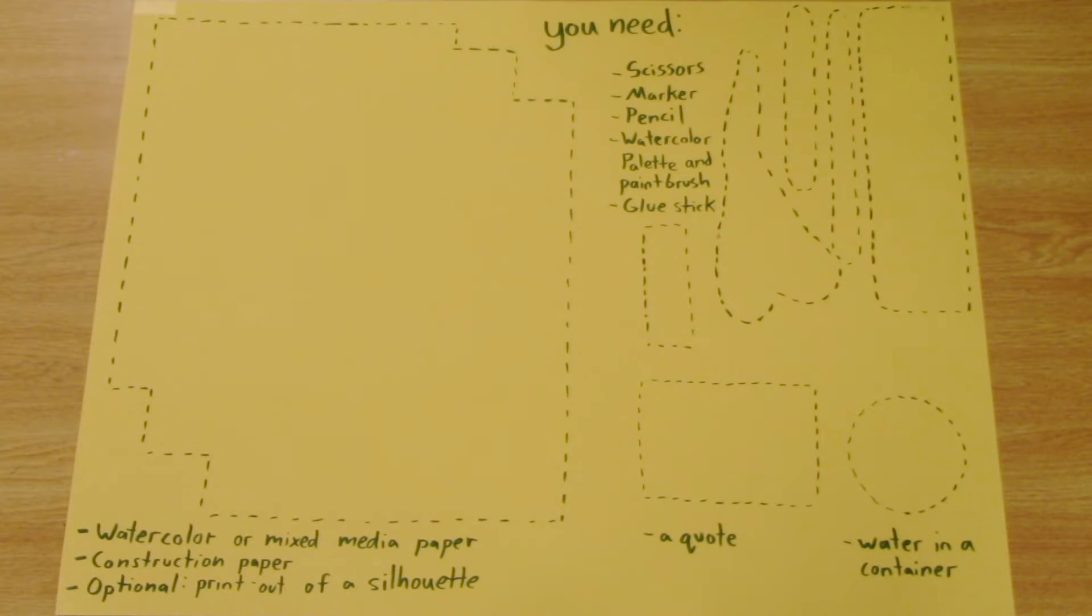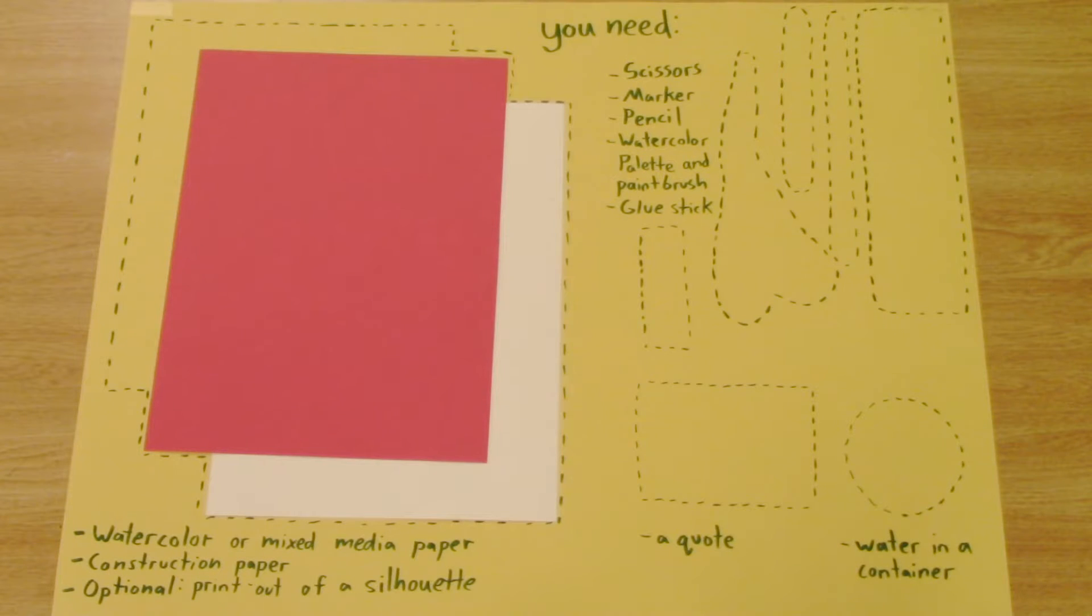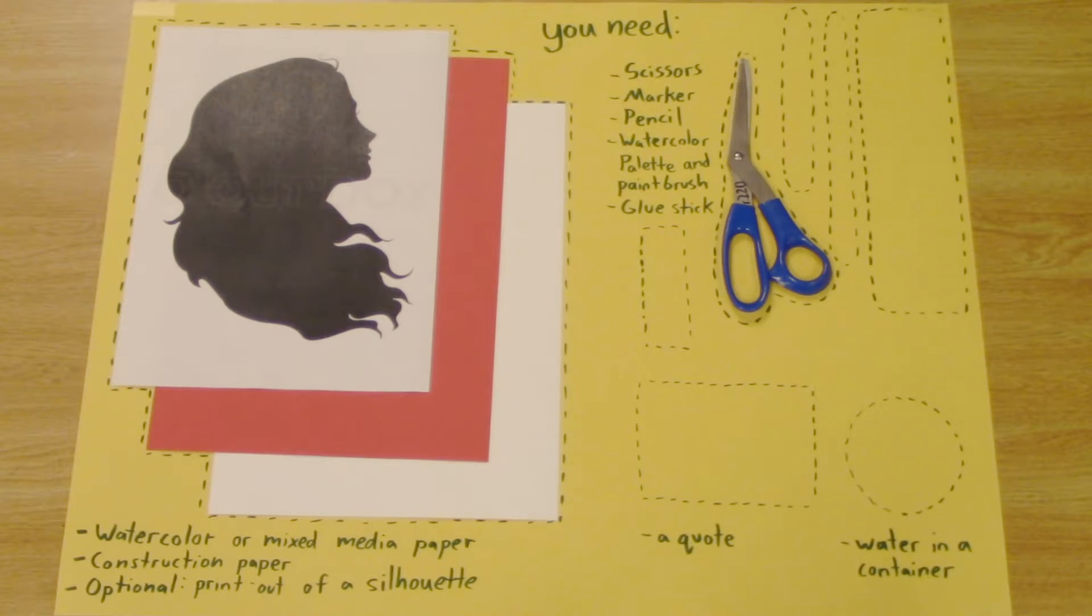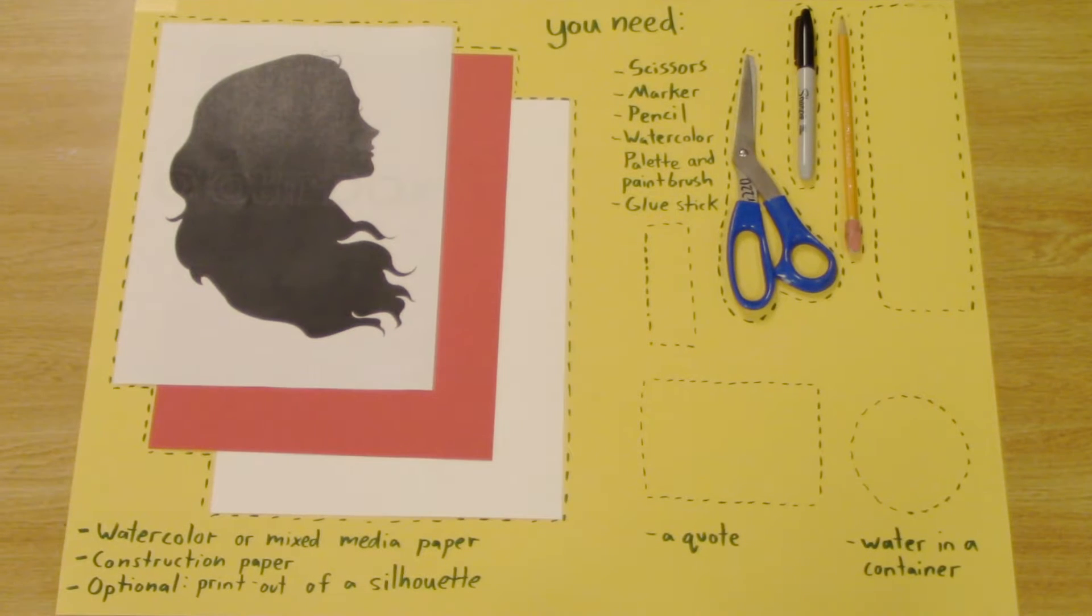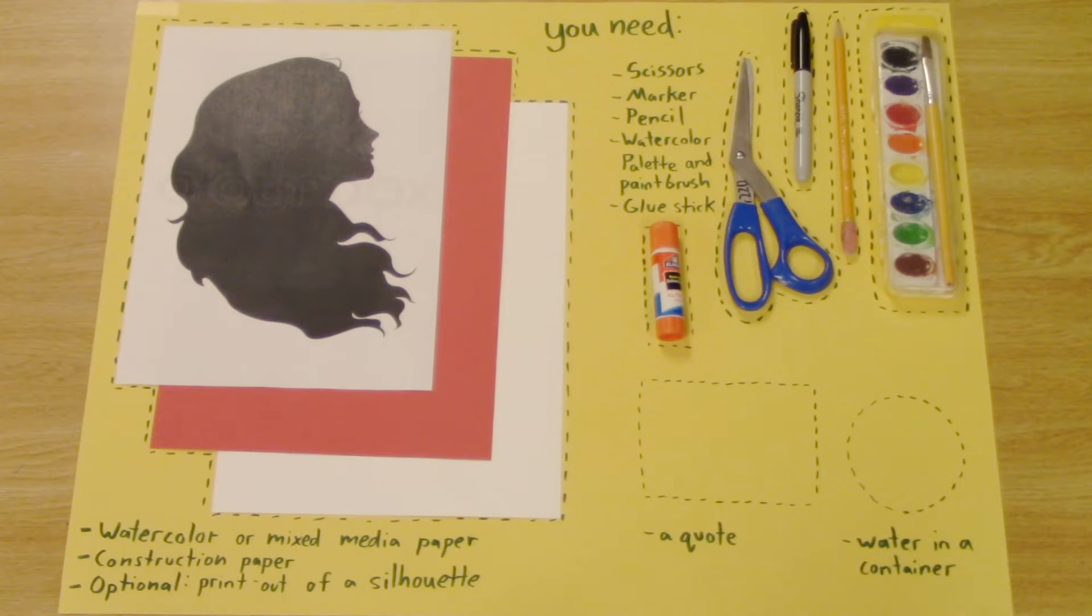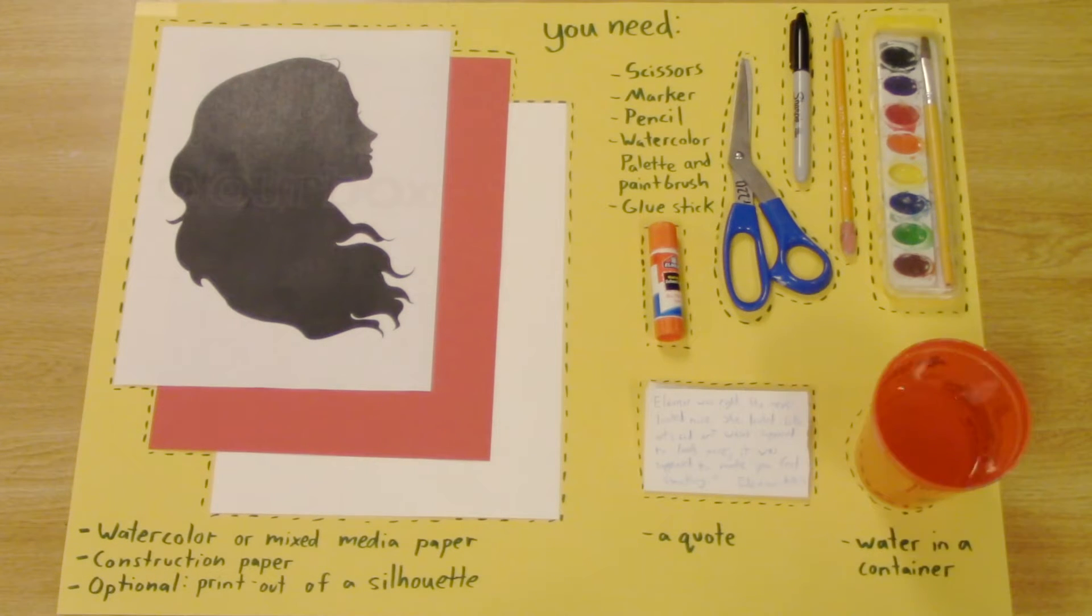To complete this project, you will need watercolor or mixed media paper, construction paper, optionally you can have a printout of a silhouette, scissors, a marker, a pencil, a watercolor palette, a glue stick, a quote, and water in a container for the watercolor set.